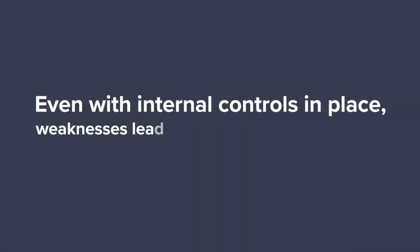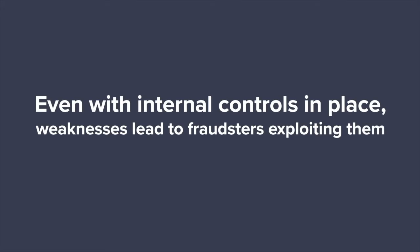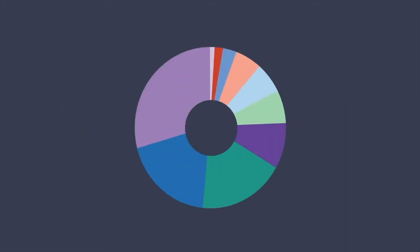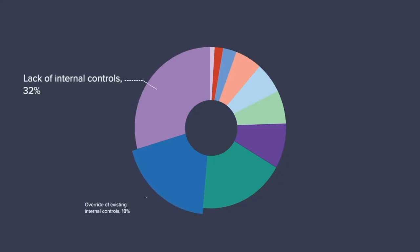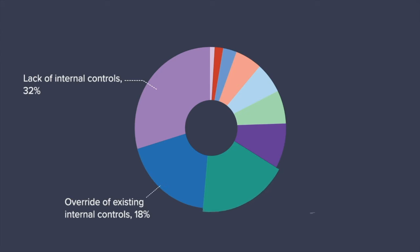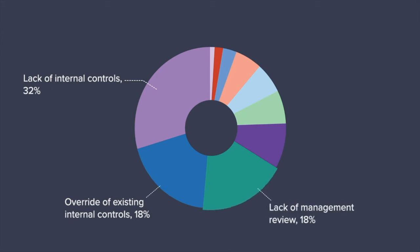Even with internal controls in place, weaknesses led to fraudsters exploiting them. The primary weaknesses that contribute to occupational fraud are: a lack of internal controls, an override of existing controls, a lack of management review, and a poor tone at the top.